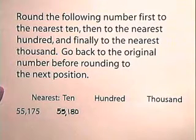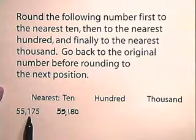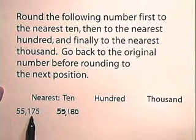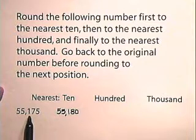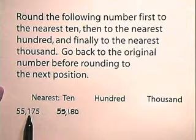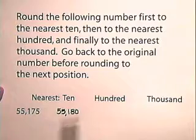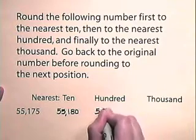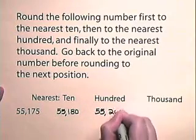To the nearest 100, we go back to our original number and we look in the hundreds spot. We look to the digit immediately to the right of the hundreds spot, and we see that this digit is 5 or greater. And so in our hundreds spot, we have to go up one digit. So this number rounded to the nearest 100 is 55,200.